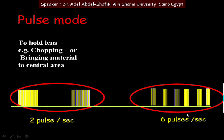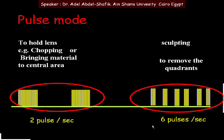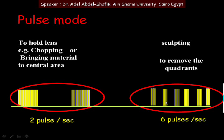Adjusting to six pulses per second gives shorter off periods and is used for removing lens material — such as scrape and sculpting or removing quadrants. The ultrasound takes material, then a short off, then more ultrasound. Long off means better holding; short off is suited for material removal.